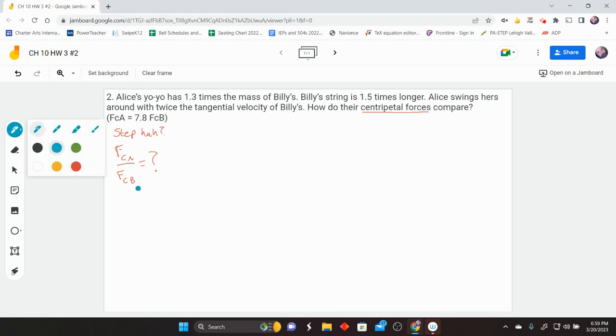Now remember, the next thing to do in this situation is make a list of the things that you know. So Alice's yo-yo has 1.3 times the mass of Billy's yo-yo. So what that means is mass of Alice, I mean her yo-yo, is 1.3 times the mass of Billy's yo-yo.